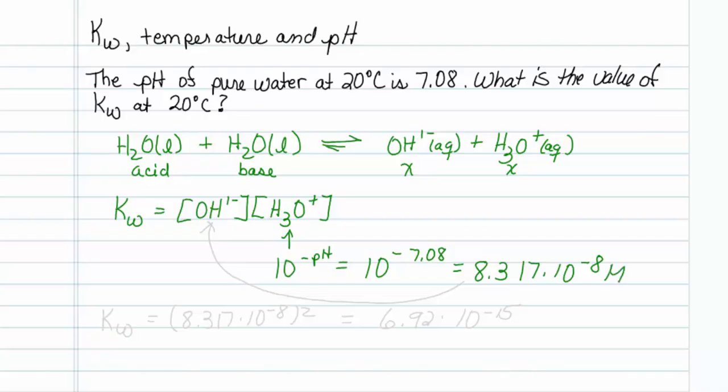Since the stoichiometry is 1 to 1, that is also the concentration of the hydroxide. So to find kW, I just need to take 8.317 times 10 to the minus eighth and square it. That's all there is to it. And that value turns out to be 6.92 times 10 to the minus fifteenth.